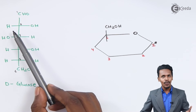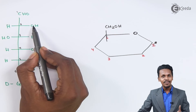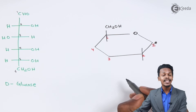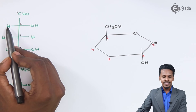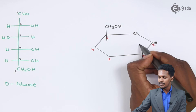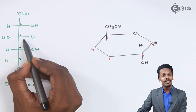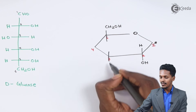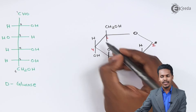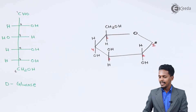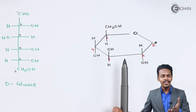For the second carbon atom, the OH is on the right-hand side in the Fischer projection, so we represent it in the downward direction in the Haworth formula. The hydrogen, being on the left, goes on the upper side. For carbon number 3, H is on the right, so H goes down and OH goes on the upper side.